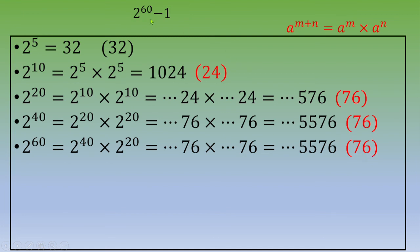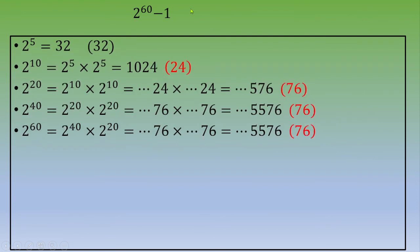To find the last two digits of 2 power 60 minus 1, this is simply 76 minus 1, which equals 75. So 7 and 5 are the last two digits. Thanks for watching this video.